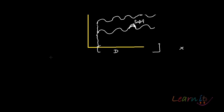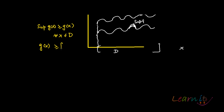Now, sup of g(x) will always be greater than or equal to g(x) for all domain values, since the supremum of g(x) is an upper bound. This is step 1. We are also given that g(x) is greater than or equal to f(x) for all x belonging to D. This is step 2.